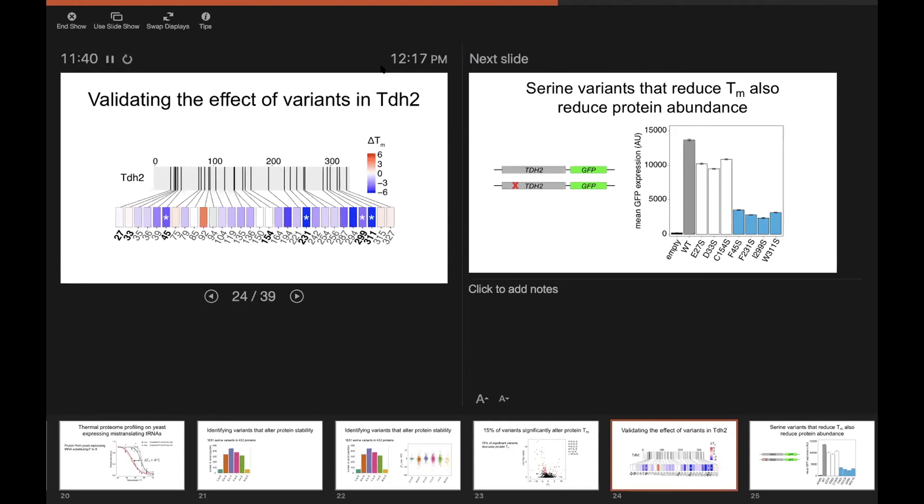And what I'm showing you here is all the positions for which we measured a serine variant. The black bars are the positions in the protein, and the colored boxes are their corresponding effect on TM. And the starred ones are ones that significantly, in this case, all of them destabilize the protein.